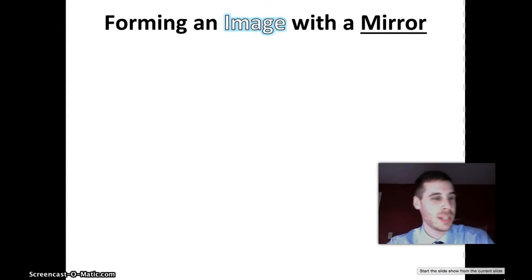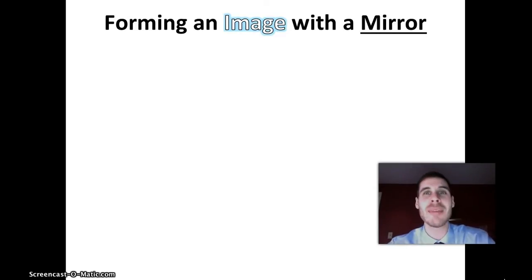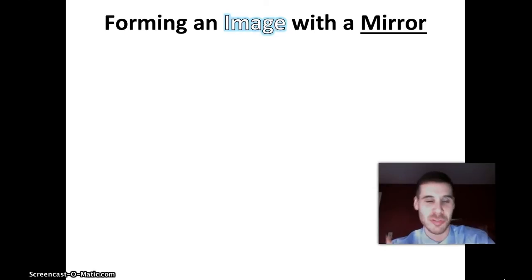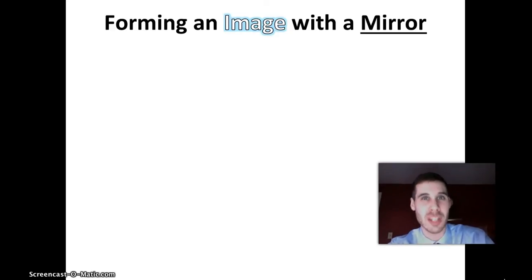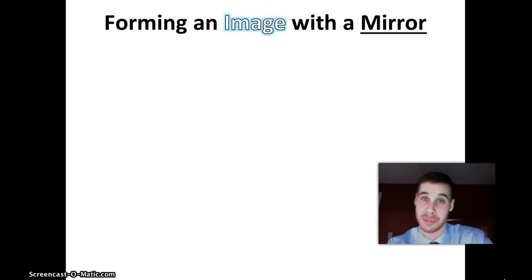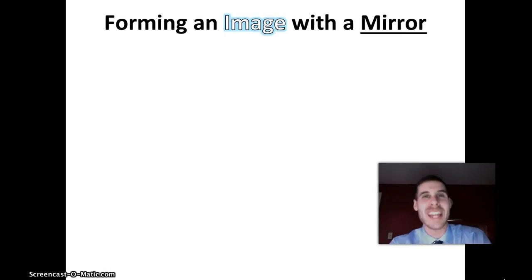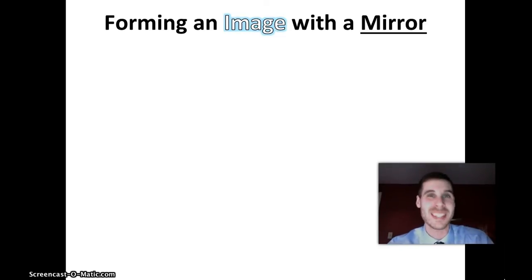Okay, so here's part two — hopefully with 60% less me being in the way of things on the screen. Forming an image with a mirror: what we just discussed is what happens when perfectly parallel beams of light strike a mirror. What's much more useful is asking, what is a reflection? When you look at yourself in the mirror in the bathroom in the morning, what is that thing you're seeing? It's you, but you know it's not really you. What we would say is that your reflection is an image of you — something you can see, but it's not real.